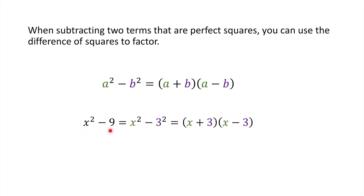For example, if we have x² - 9, notice that it can be rewritten as x² - 3² because both of these terms are perfect squares. That means x is a and 3 is b. So we can write this in factored form as (x + 3)(x - 3).